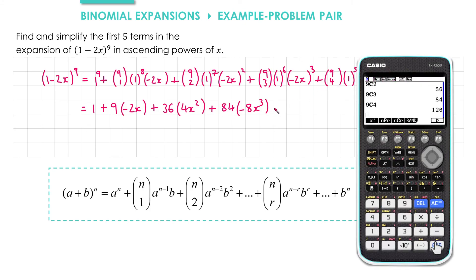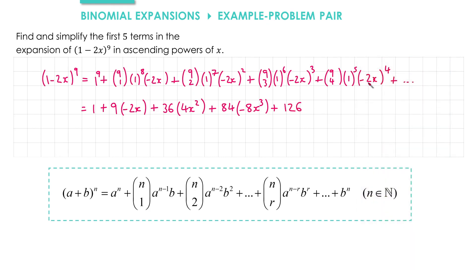9 choose 4 gives us 126, and then minus 2x all to the power of 4 gives us positive 16x to the 4.